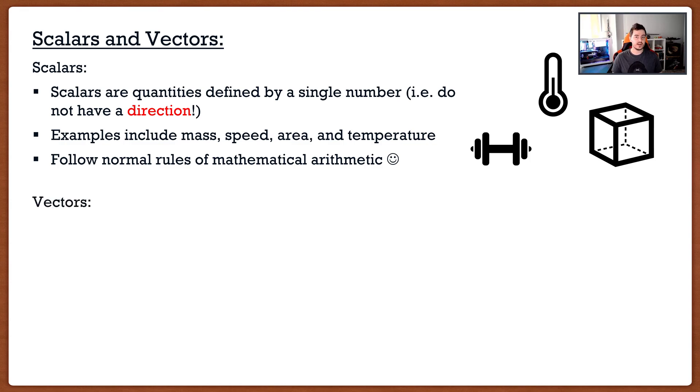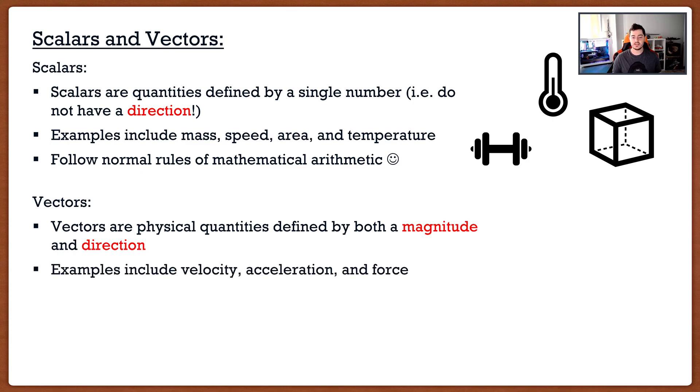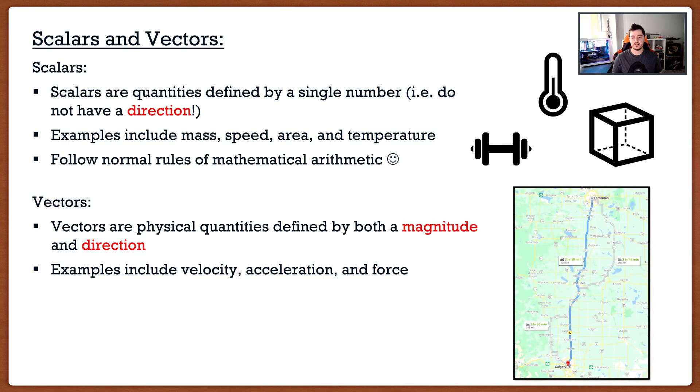Where things start to get a little bit different is when we start talking about vectors. Vectors are physical quantities defined by both a magnitude as well as a direction. The key here is that they have that direction component. Some examples would include velocity, acceleration, and force.